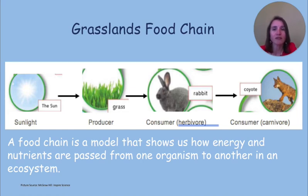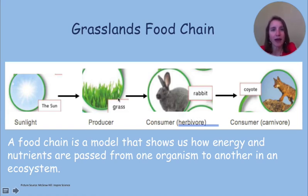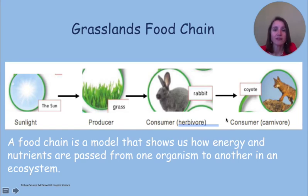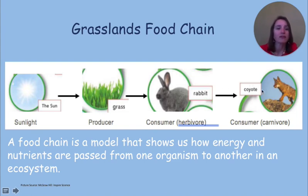Almost all food chains begin with the sun. The sun's energy is then passed to the producers — in this case, that would be the grass. That energy is then passed to a consumer. In this food chain, the rabbit, which is an herbivore, is getting its energy from the grass. And then that energy may be passed to another consumer — the coyote is getting its energy from the rabbit. All food chains end with decomposers. Food chain models always use arrows to show how the energy flows through the ecosystem. The arrows start at where the energy comes from and point to who gets the energy. For example, the rabbit is eaten by the coyote, so the arrow starts at the rabbit and points toward the coyote.